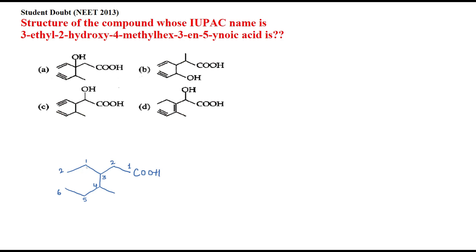Two-hydroxy means on position two I have a hydroxyl group. Four-methyl means on the fourth position I'm having a methyl group — in a methyl group there is only one carbon. Hex means my carbon root chain has six carbons.